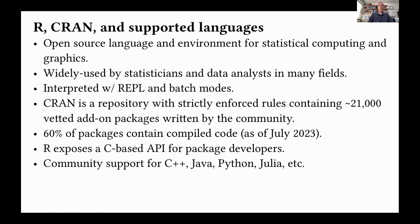60% of the packages on CRAN contain some sort of compiled code for the sake of speed. R itself is an interpreted language and is quite slow, so really it's a wrapper over some low-level code that runs much faster. R exposes the C API for package developers, but other languages can also be used to develop R packages based on community support, most famously C++.